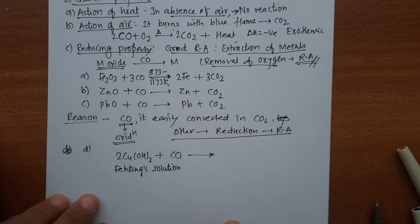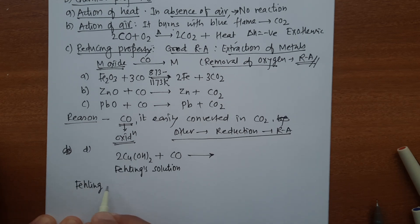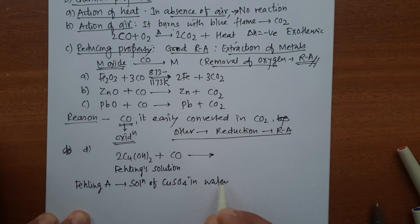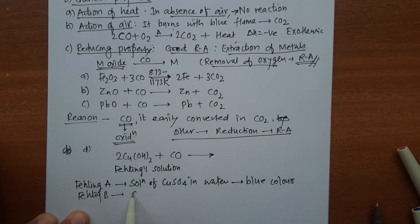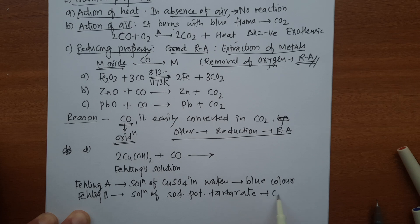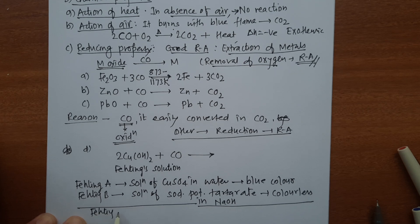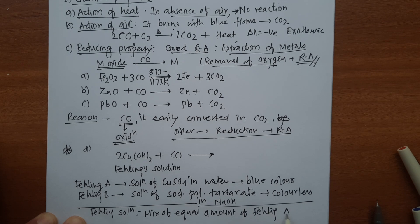Fehling's solution is a mixture of Fehling's A and Fehling's B. Fehling's A is a solution of copper sulfate in water — it is a blue color solution. Fehling's B is a solution of sodium potassium tartrate in NaOH — it is colorless. When equal amounts of both are mixed, the resulting Fehling's solution is a dark blue color solution.